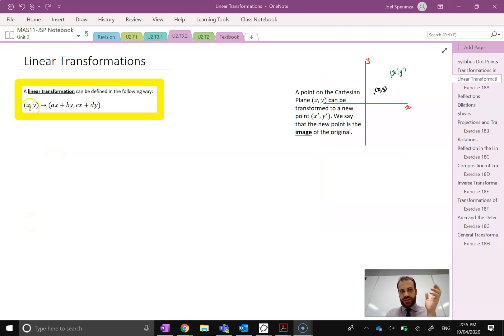There's some point (x,y) and then we transform it, this little arrow here, into the point (ax + by, cx + dy), where a, b, c and d are constants of some kind.